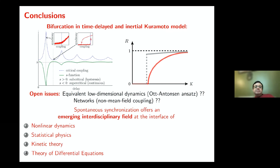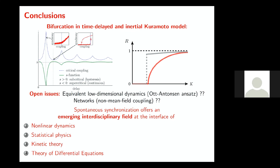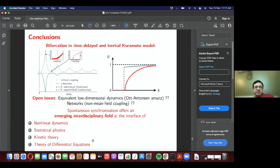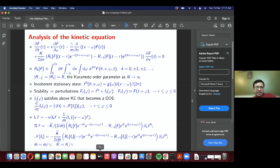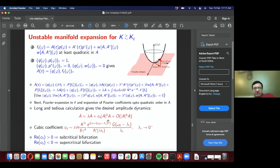Question: How crucial is the assumption about the distribution of disorder? The result for the parameter c_3 — which determines whether you have a supercritical or subcritical bifurcation — applies to any unimodal distribution. I showed the result for a Lorentzian, but it works for any unimodal distribution.